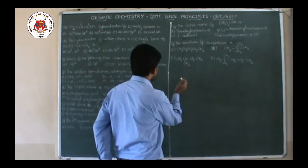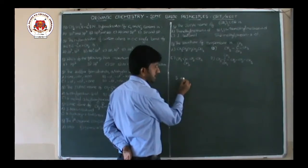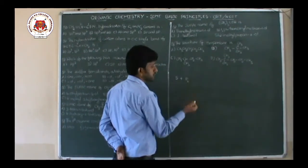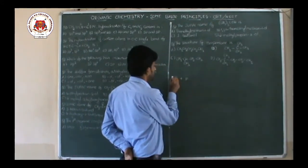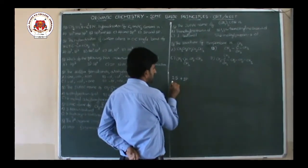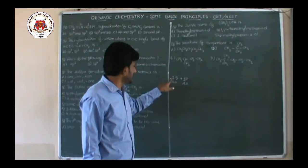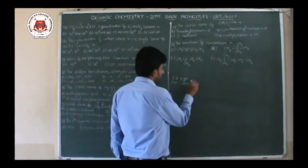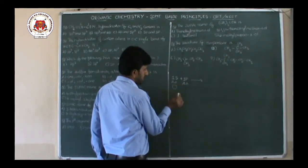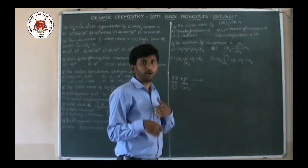For example, one S atomic orbital, if it intermixes with PX, PY, or PZ — one S orbital mixed with one P orbital. If two atomic orbitals — I am writing AO, meaning atomic orbital — are mixed together, you know that S is spherical and P has a double-lobe shape.